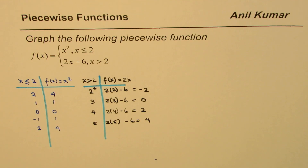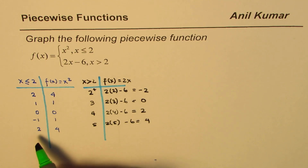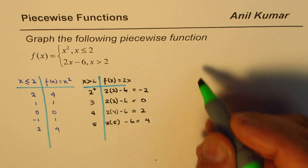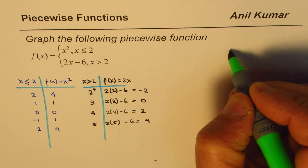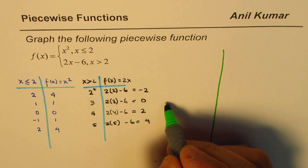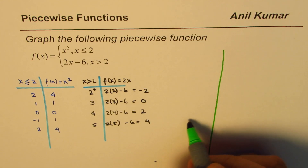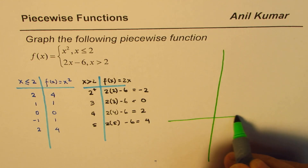So once we have the values, we can create a graph. We will do an approximate sketch. We are looking for values roughly between minus 2 and 5. We'll extend more towards the left side. Most of the values are positive, except for one.